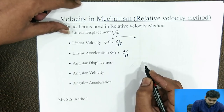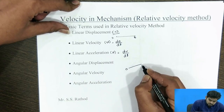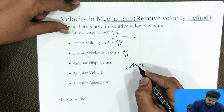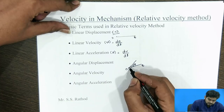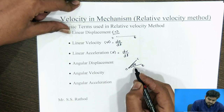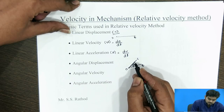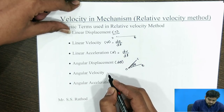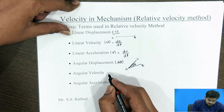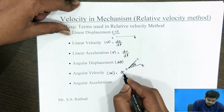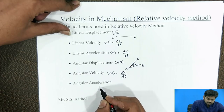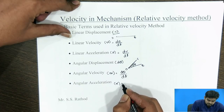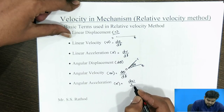Next, angular displacement: suppose OB is one line and it travels an angle of delta theta in a short interval of time. Then delta theta is the angle taken to reach the new position from OB to OC, so this delta theta is called angular displacement. Angular velocity is the rate of change of angular displacement with respect to time, denoted by omega = dθ/dt. Angular acceleration is the rate of change of angular velocity with respect to time, denoted by alpha = d omega/dt.